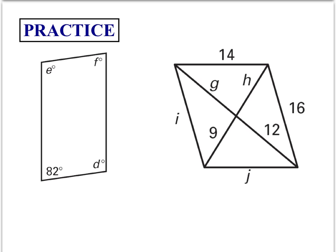Okay, some more practice problems to do. For this parallelogram right here, let's find E, F, and D. So if this angle is 82, we know that opposite angles need to be congruent. So I know that F is 82 as well.